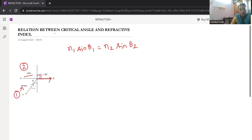Now, N1 is the denser medium and N2 is the rarer medium refractive index.